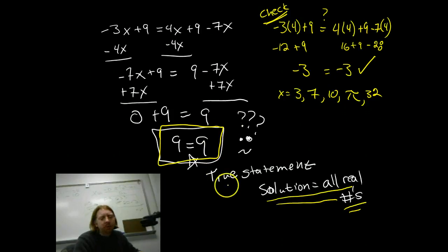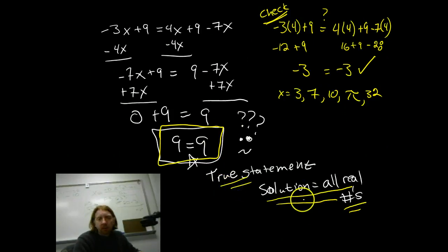So, kind of remember, true statements, all real numbers, false statements, meaning something that can't be, 3 equals 5. Then you would say, there are no solutions.